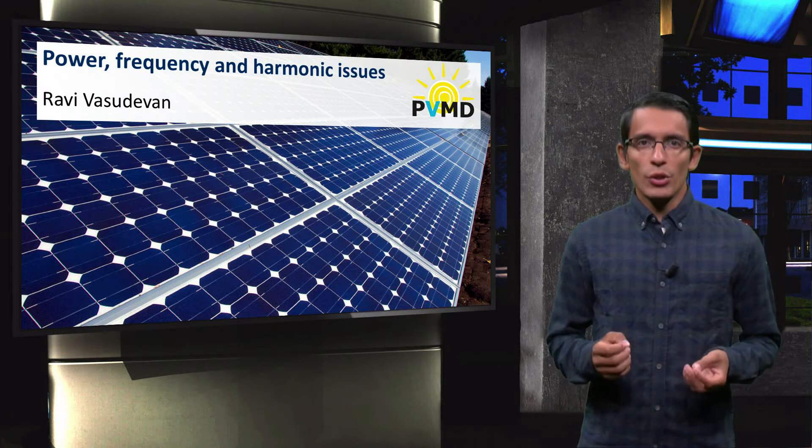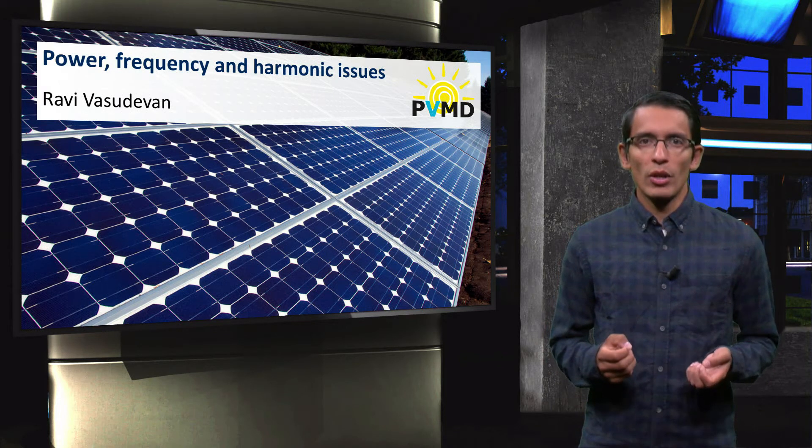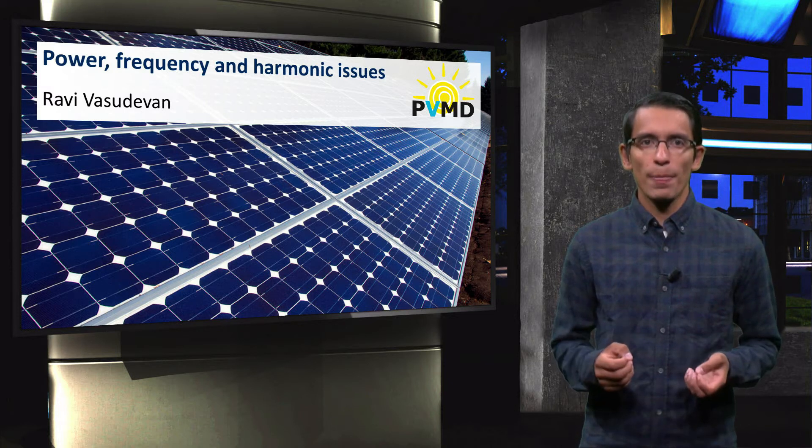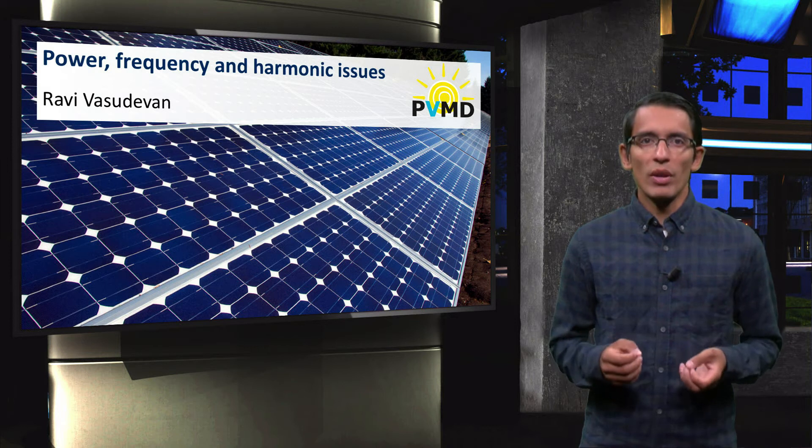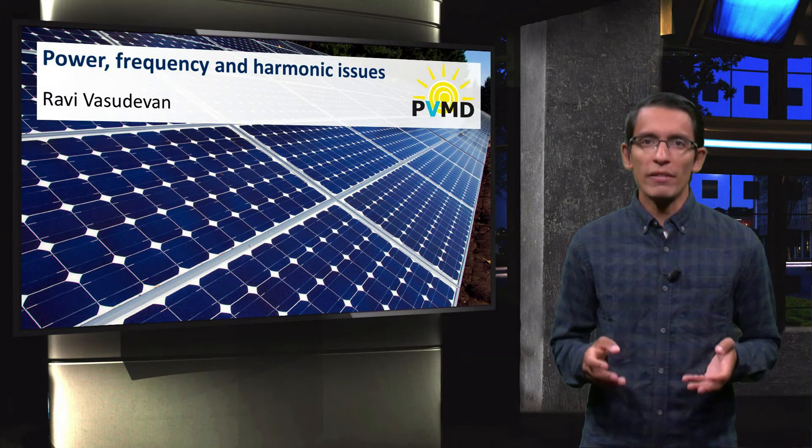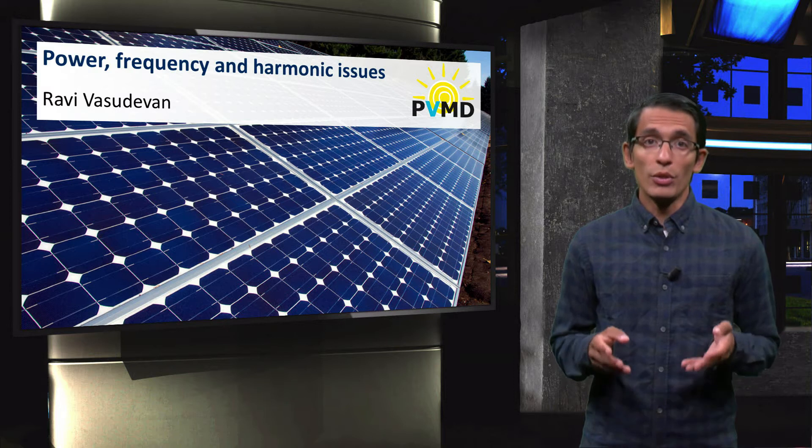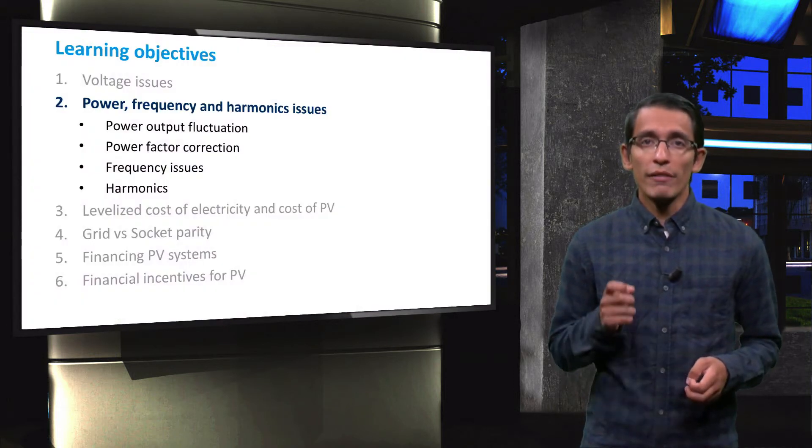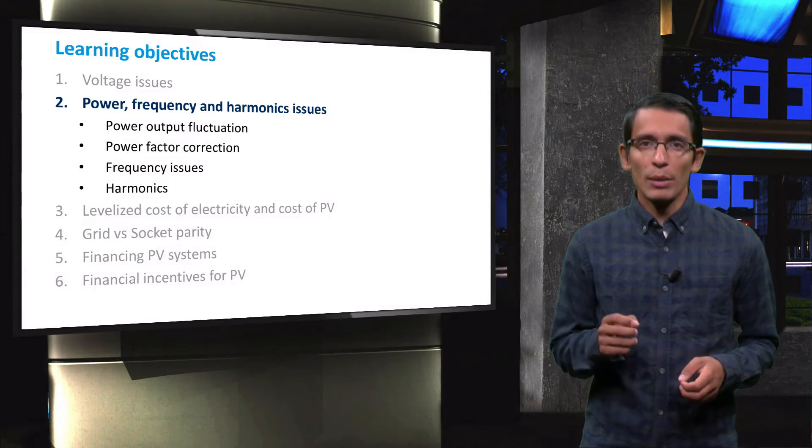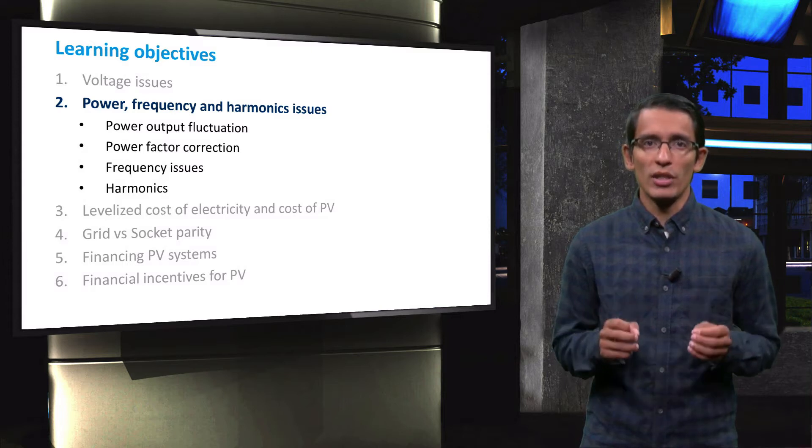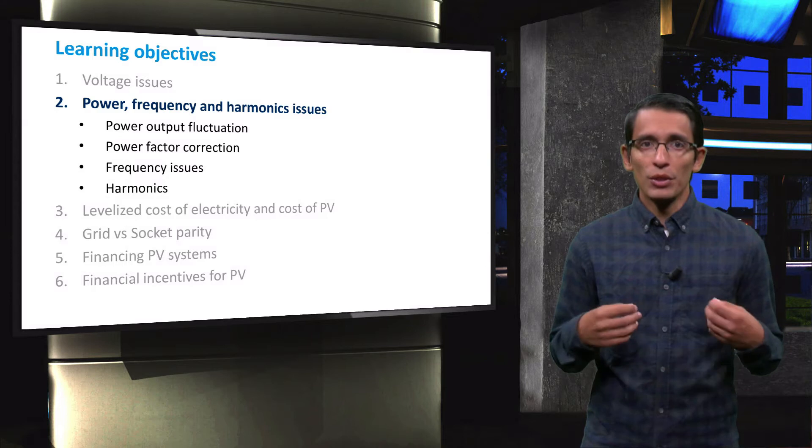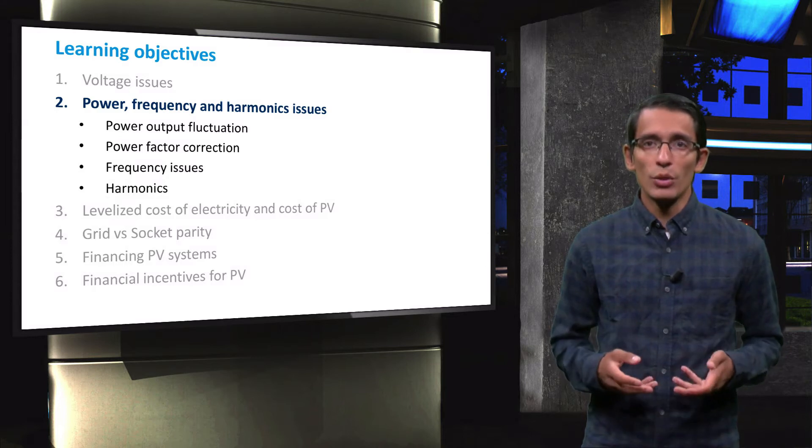In this section, we discuss the issues that arise when photovoltaic systems are integrated into the electricity grid in large quantity. We have discussed how the grid voltage can be affected by distributed generation like PV, but there are other issues as well. In this video, we will focus on the power and frequency issues. The learning objectives for this video are to understand how power output fluctuations disrupt the electricity grid. You will learn about power factor corrections, and we will discuss frequency and harmonic issues in the power supply.